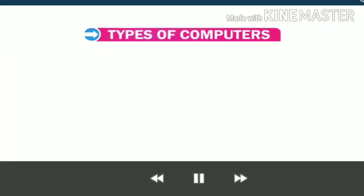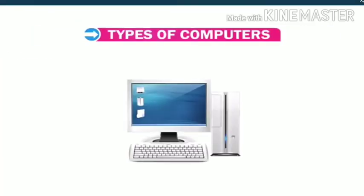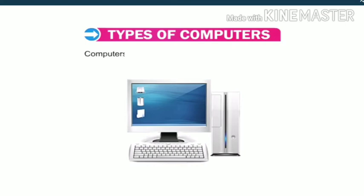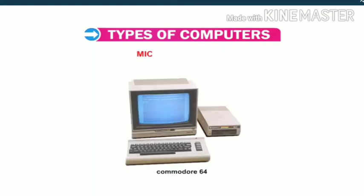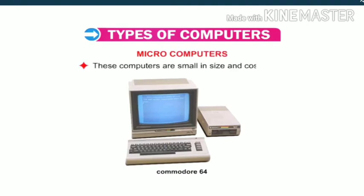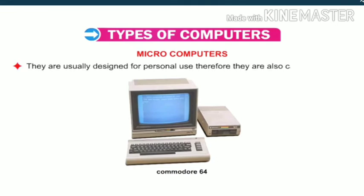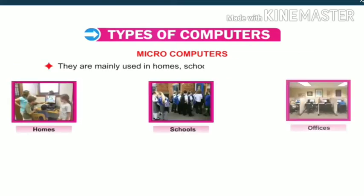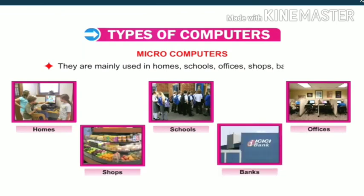Now let us talk about types of computers. There are different types of computers with respect to size, speed, storage capacity and cost. Microcomputers are small in size and cost less. They are usually designed for personal use, and therefore are also called personal computers. They are mainly used in homes, schools, offices, shops, banks, etc.